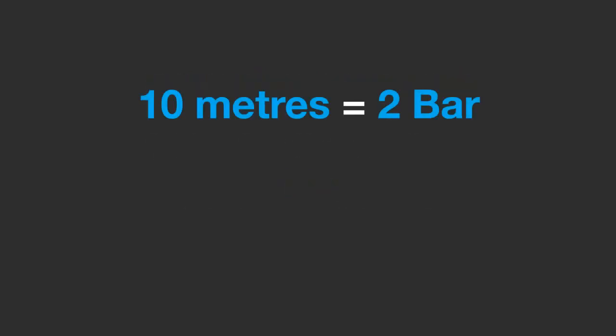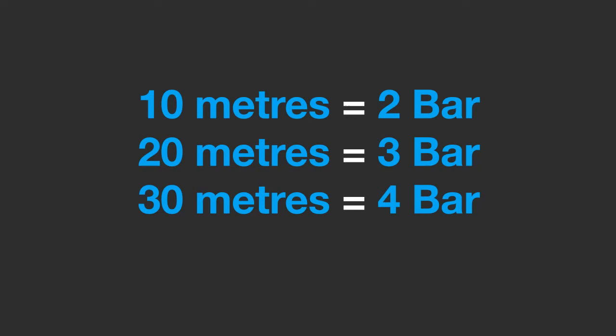10 meters is 2 bar, at 20 meters deep the pressure is 3 bar, at 30 meters it's 4 bar, etc. So you could say it's always one more than the depth.